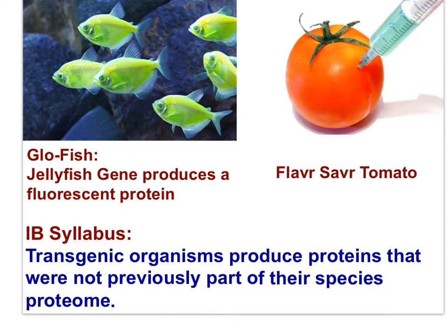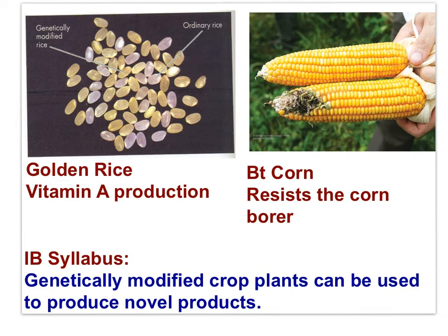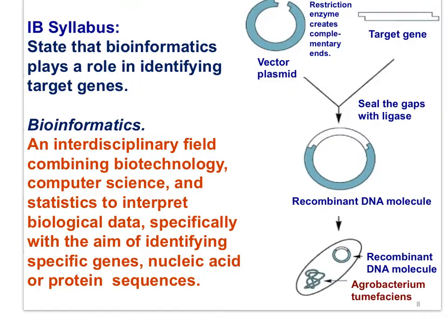GloFish have a jellyfish gene that produces a protein that fluoresces. The Flavor-Saver tomato was the first genetically modified organism sold commercially in the early 1990s. It produces a protein that interferes with natural decomposition, giving it a longer shelf life after being picked from the vine. Genetically modified crop plants can be used to produce novel products. Golden rice was genetically modified to produce vitamin A, and Bt corn has a gene that produces a protein distasteful to the corn borer pest, increasing yields.